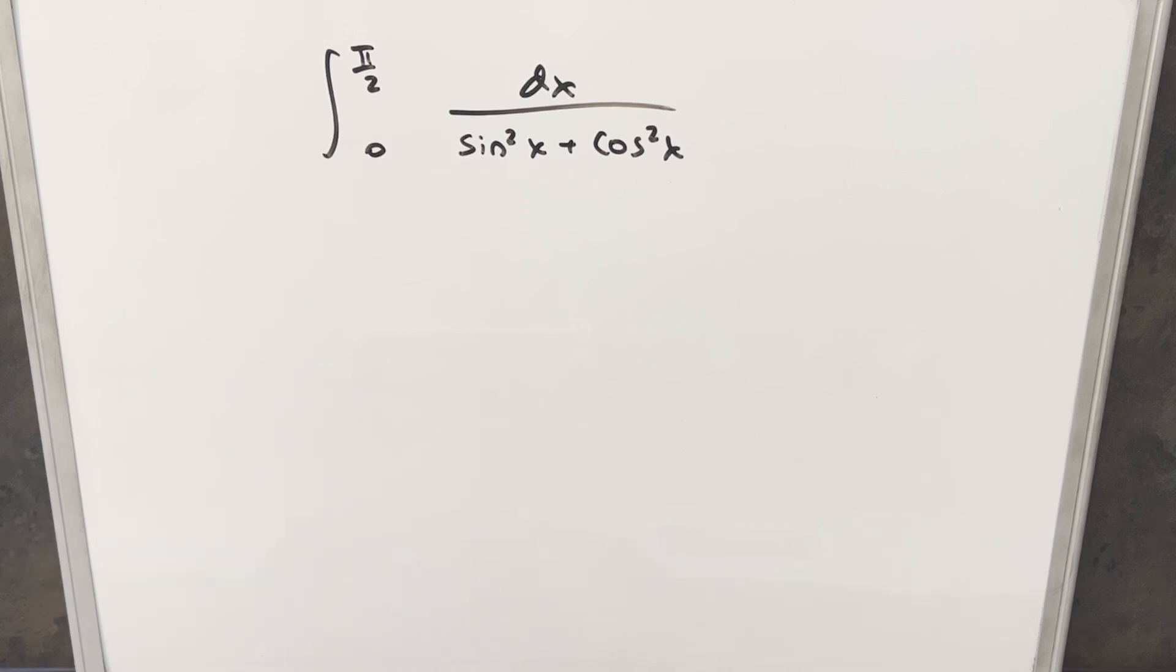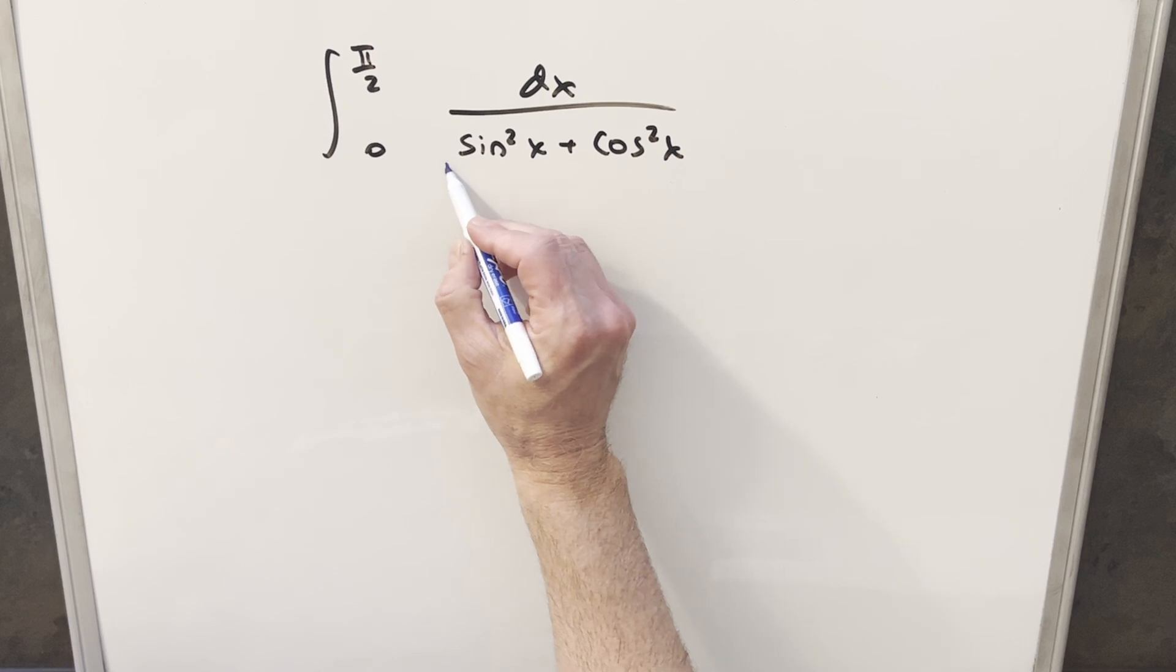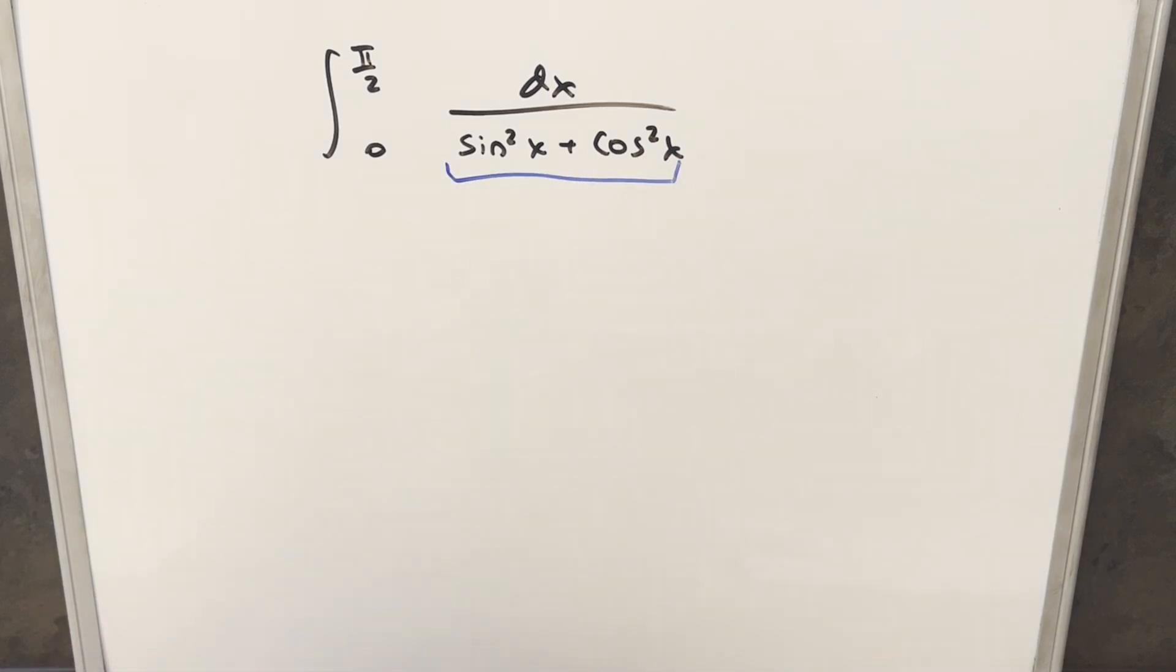Every once in a while I get in a difficult situation like this where I end up with an integral and I've got a denominator I don't quite know what to do with. But then thinking it over a bit, I realize this is a perfect case for a Weierstrass substitution.